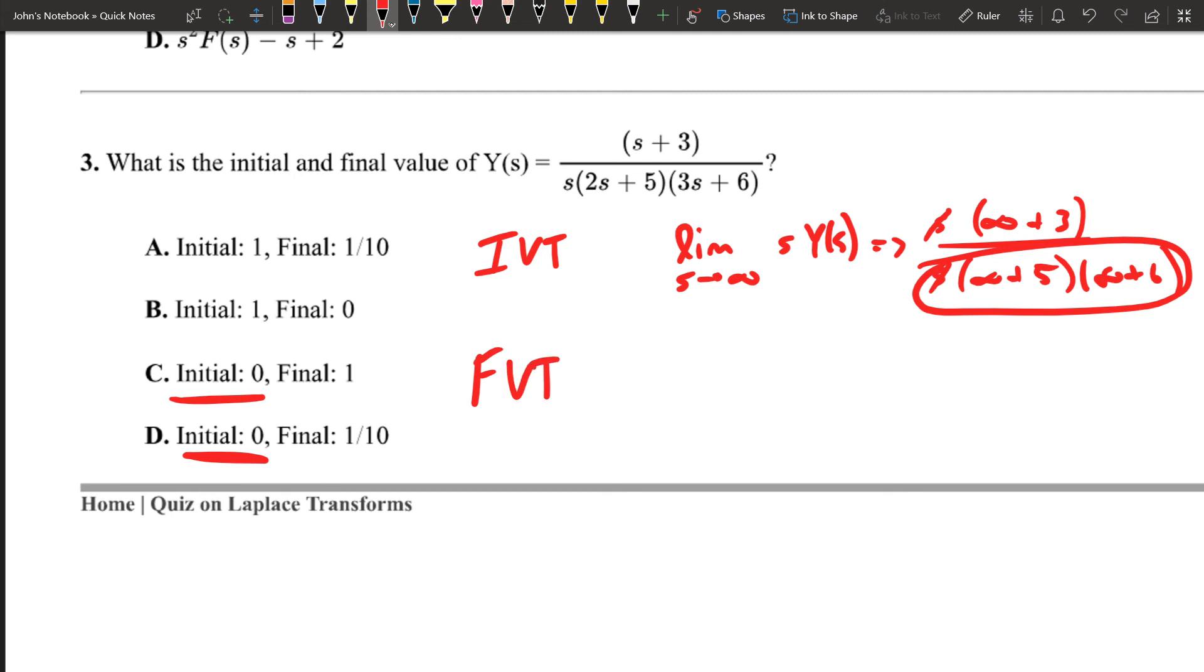Let's apply the final value theorem as well. That's going to be the limit as s goes to 0. I'm going to multiply by s of y of s. Let's go ahead and do that one. I'll have s over s, and then I'll have s plus 3. And then 2s plus 5 times 3s plus 6. Let's go ahead and cross out those two. This one's going to go to 0, 0, and 0. And so in this case, I have 3 divided by 30, and that's going to be equal to 1 over 10. So the final value theorem says that this asymptotically approaches 1 tenth.